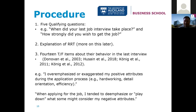The entire team all received a link, reviewed the procedure, fed back on it, and it was iterated and improved. Then we sent this link out to our own panels or samples within our own countries. The procedure in all cases started with five qualifying questions — for example, when did your last job interview take place, and how strongly did you wish to get the job. These questions established that participants had at least one job interview recently and were able to participate.